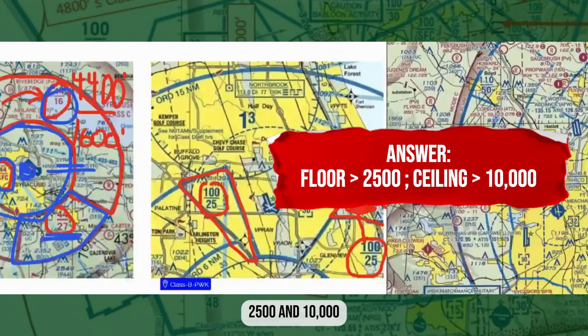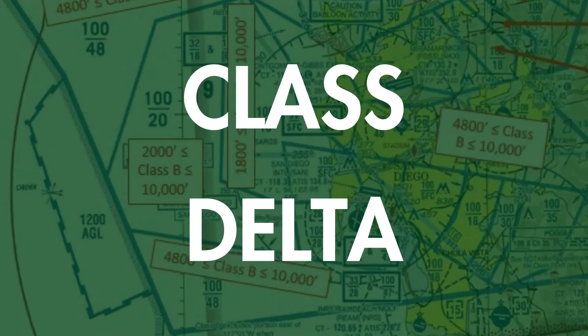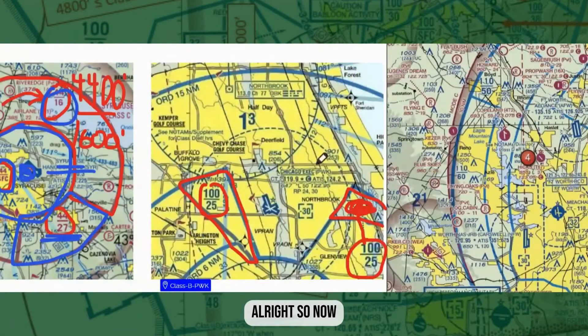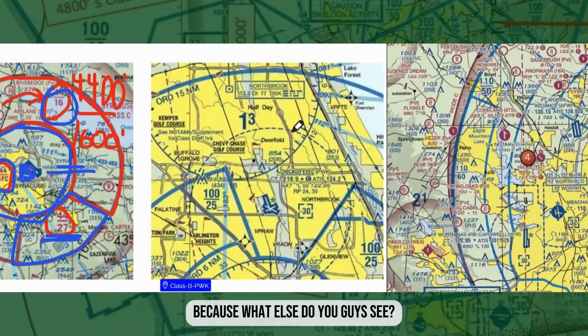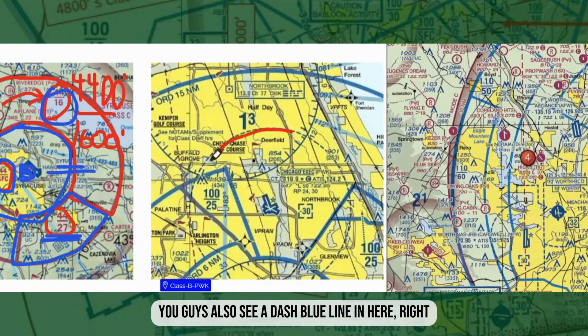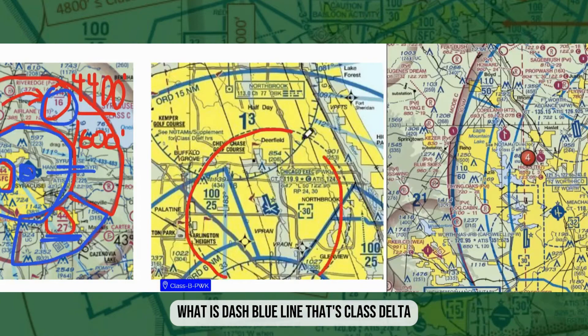The floor and ceiling of this Class Bravo area here is 2,500 and 10,000. Now it's getting more complex because you also see a dashed blue line in here — that's Class Delta.